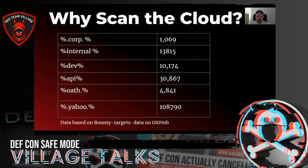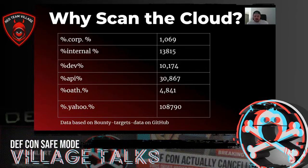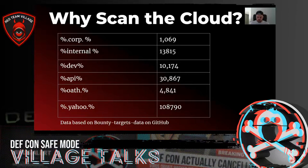Here's some quick data we grabbed from our database. Looking at about a thousand corp domains and 13,000 internal domains, we found it fascinating how a lot of these domains in the cloud — the DNS names — have stuff like 'internal,' 'corp,' 'dev.' That tells you the type of things companies are putting out on the cloud and on the edge. Things like API — a lot of cloud APIs are obvious. And if you look at specific targets like Yahoo or OAuth, you're looking at around a hundred-plus thousand targets all out there in the cloud.